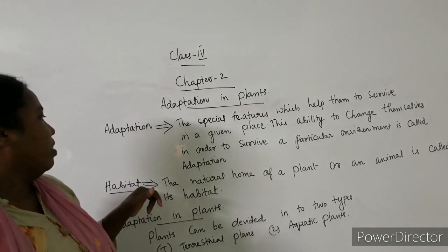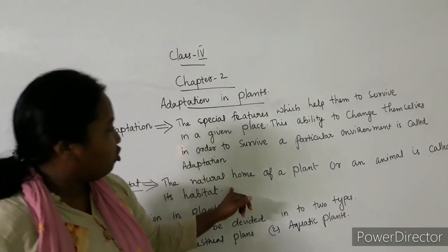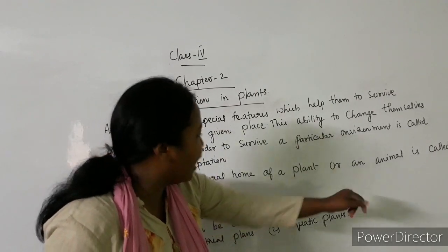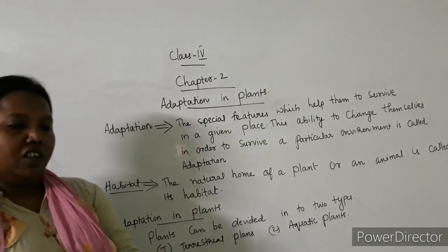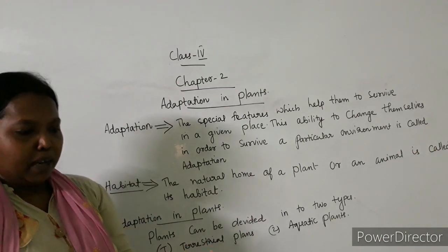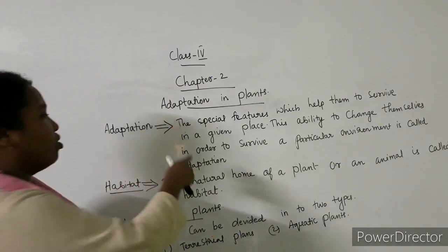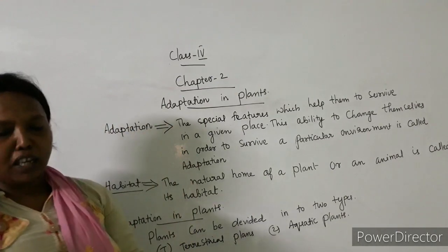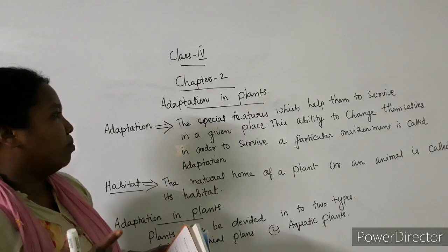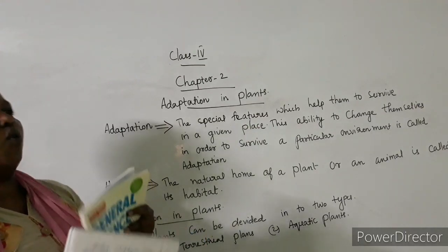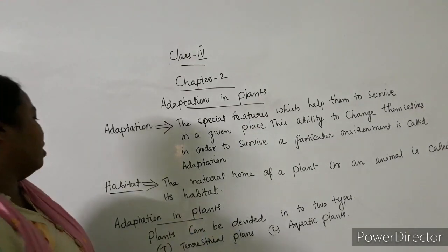Next, habitat. What is habitat? It is the natural home of a plant or an animal. We all know the place where a plant and animals live is called habitat.